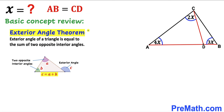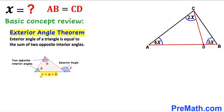Now let's go over the exterior angle theorem. According to this theorem, the exterior angle of a triangle is equal to the sum of the two opposite interior angles, as you can see in this diagram. Here angle C is the exterior angle, while angles alpha and beta are the opposite interior angles, such that angle C equals alpha plus beta.